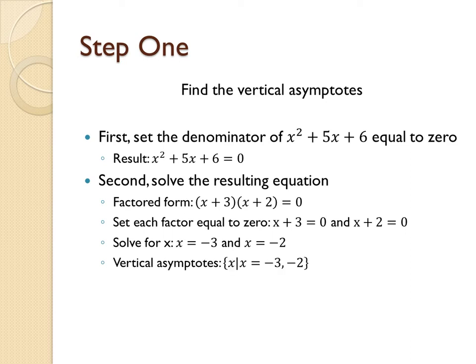So, our vertical asymptotes are x = -3 and x = -2.